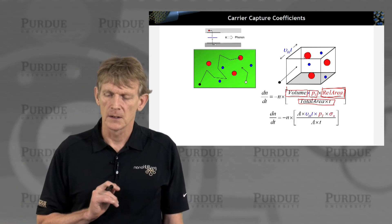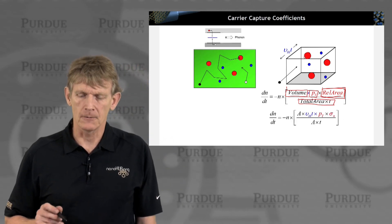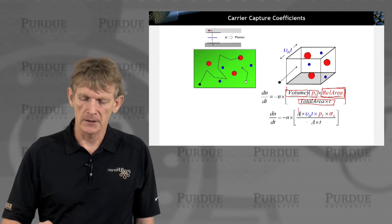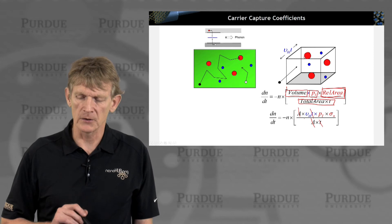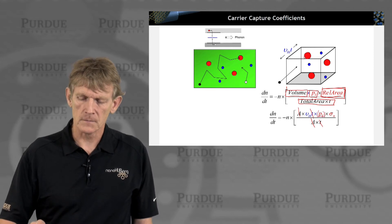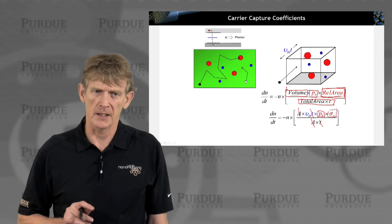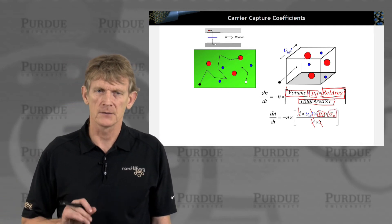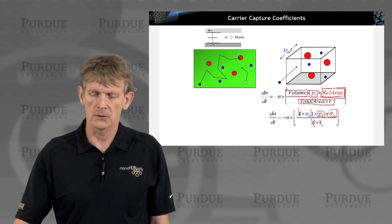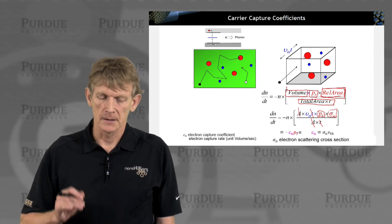And the total flow is the total area times vth. So we can put in our symbols now where this area cancels out, time cancels out, and we have the thermal velocity, we have the number of hole-filled trap, and we have what's called a scattering cross-section, or a capture cross-section. And we'll talk more about that cross-section in the next slide.